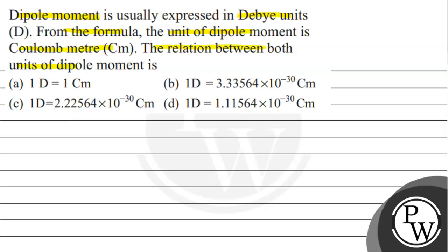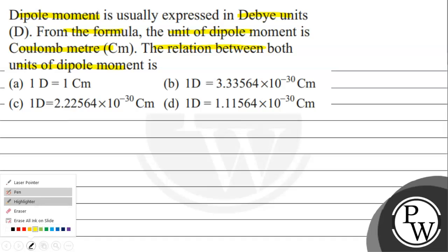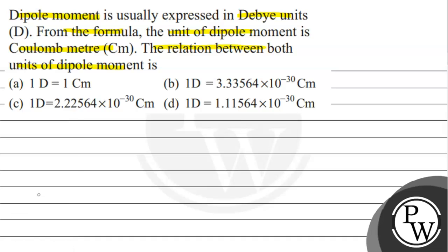The relation between both units of dipole moment is: Option A, 1 Debye equals 1 coulomb meter. Option B, 1 Debye equals 3.33 × 10⁻³⁰ coulomb meter. Option C, 1 Debye equals 2.22564 × 10⁻³⁰ coulomb meter. Option D, 1 Debye equals 1.11564 × 10⁻³⁰ coulomb meter.